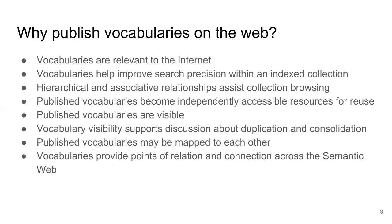A controlled vocabulary helps to improve the precision of results when searching an indexed collection. Hierarchical and associative relationships help when browsing collections. When published online, controlled vocabularies become accessible resources. Rather than locked up in a specific institutional system, or accessible only to members of a particular network, these vocabularies become available for direct access and reuse. Publishing a vocabulary makes it more visible.